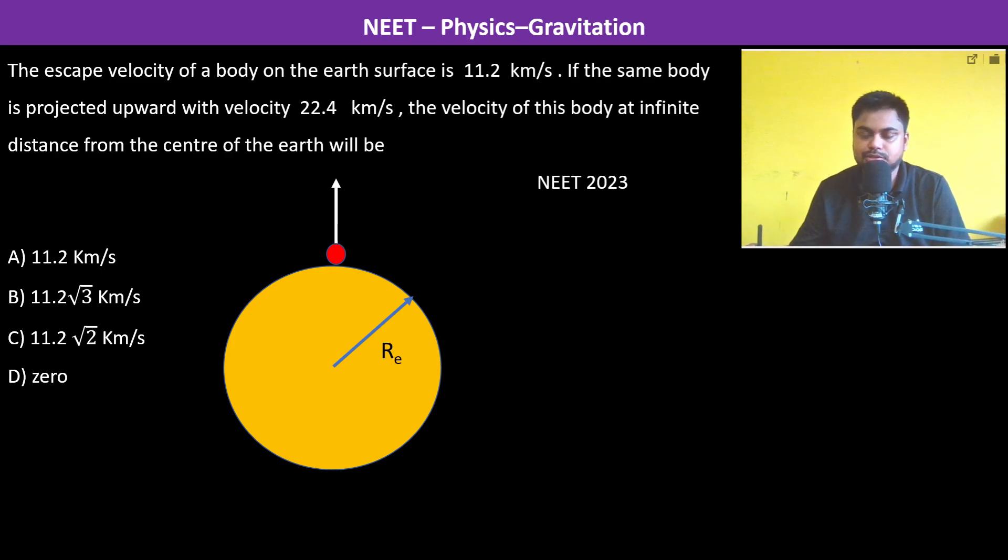The escape velocity of a body on Earth is 11.2 km/s, so basically √(2GMₑ/Rₑ) = 11.2 km/s. The same body is projected upward with velocity 22.4 km/s. The velocity of this body at infinite distance from the center of the Earth will be: